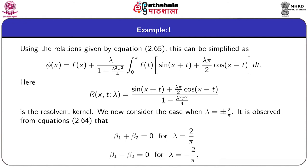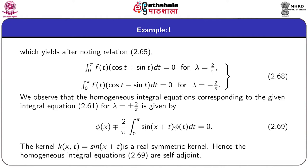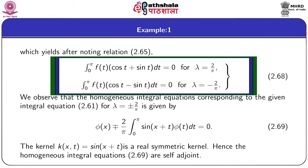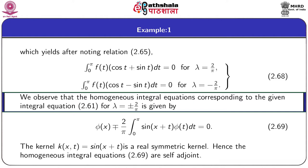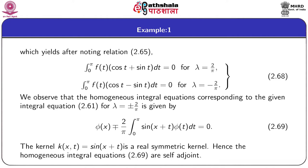Substituting the values of β1 and β2 in these two expressions, we find that they give rise to equation 2.68. For λ = 2/π we get the first relation involving the forcing function f(t) and cos(t) + sin(t), and for λ = −2/π we get the second relation.